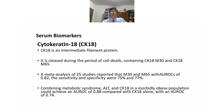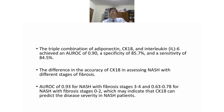A meta-analysis of 25 studies reported that M30 and M65 had an AUROC of 0.82, with sensitivity and specificity of 75% and 77%. Combining metabolic syndrome, ALT, and CK18 in morbidly obese populations could achieve an AUROC of 0.88 compared with CK18 alone at 0.87. The triple combination of adiponectin, CK18, and interleukin-6 achieved an AUROC of 0.90, specificity of 85.7%, and sensitivity of 84.5%. However, CK18 accuracy in assessing NASH varies with different stages of fibrosis.